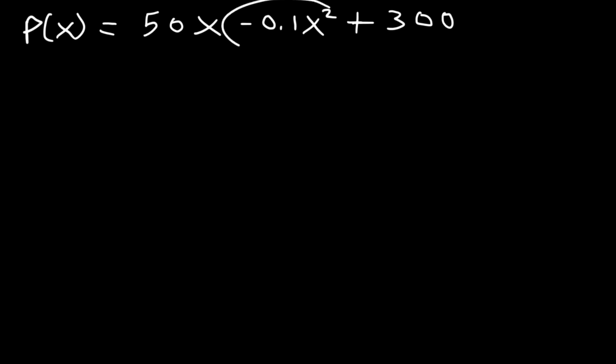Now if you think of the graph, notice that we have a negative x squared. So this graph should look something like this. There's going to be some x value where the profit is at a maximum and that's basically the location of the vertex. So if we can find the vertex, we can find the maximum profit and how many units we should sell to attain maximum profit.